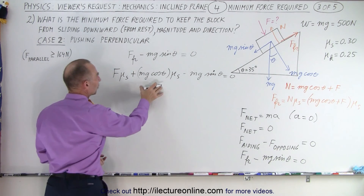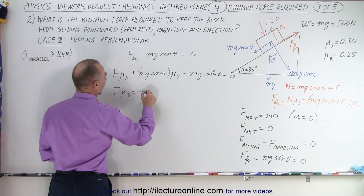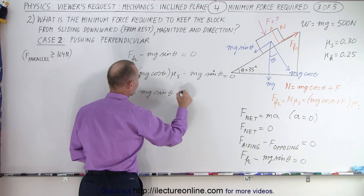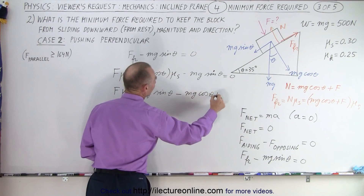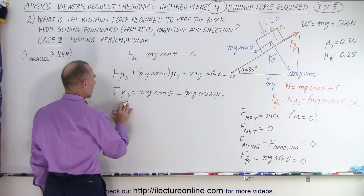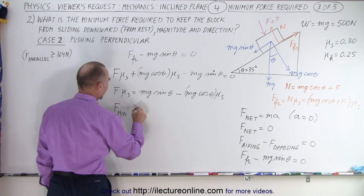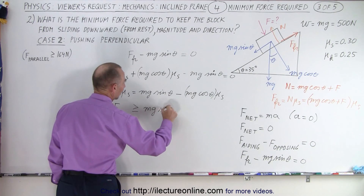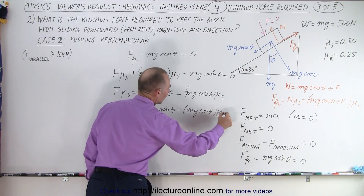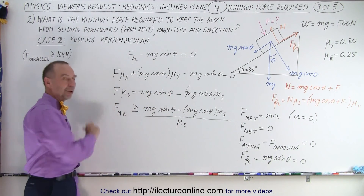We can move mg sine theta to the other side. Now we have F times mu sub s equals mg sine theta minus mg cosine theta times mu sub s, and this is beginning to look familiar — we've seen that before. We know what these values are, and now to get F minimum, it is greater than or equal to mg sine theta minus mg cosine theta times mu sub s, all divided by mu sub s. And that's the minimum force required.